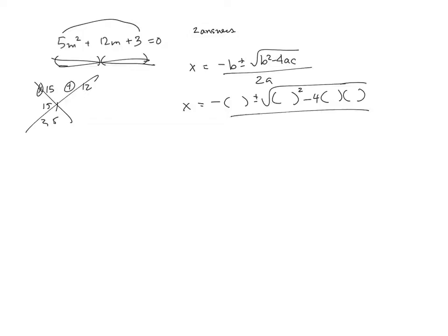A times C all over 2 times A. Okay, so plug the numbers in. B is 12, A is 5, and C is 3.